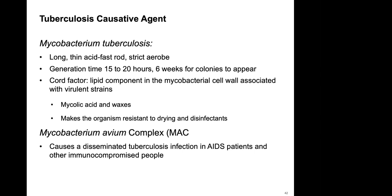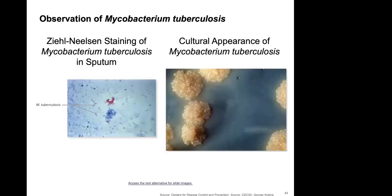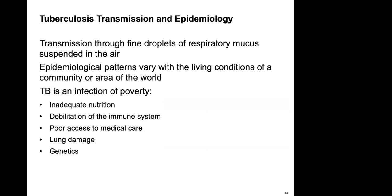The acid-fast test detects mycolic acid in the cell wall of Mycobacterium tuberculosis. Transmission is through fine droplets of respiratory mucus suspended in the air — essentially airborne spread. TB is an infection of poverty, associated with inadequate nutrition, debilitated immunity, poor access to medical care, lung damage, and genetics.